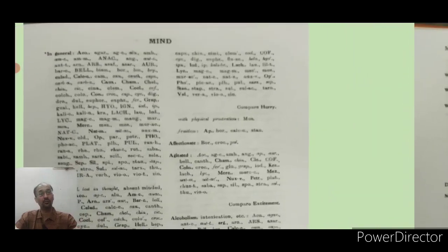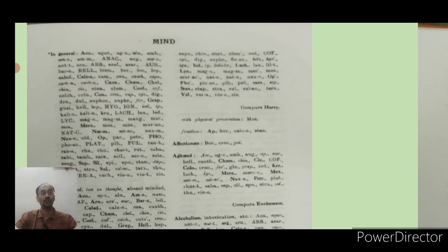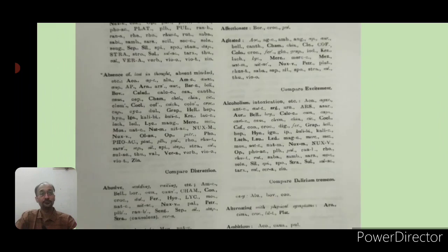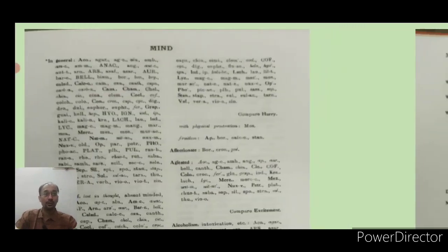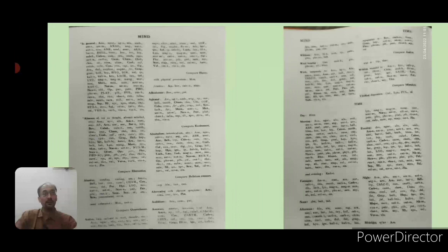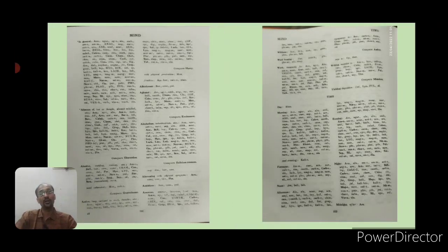The second type of cross reference is given within a chapter with the heading 'compare' — for example, a rubric 'active' may have 'compare: hurry.' This is a similar kind of cross reference. The third type is when you need to locate a rubric in a separate chapter: it is written with 'c', the name of the chapter, and the name of the rubric.